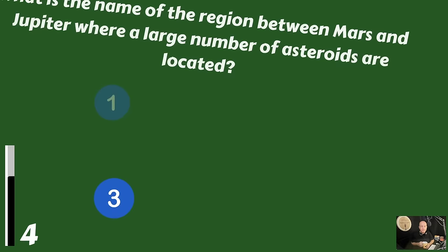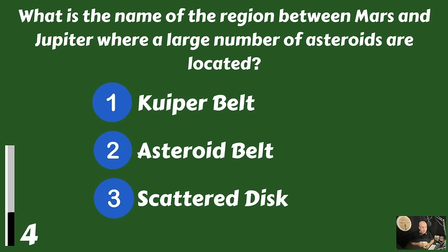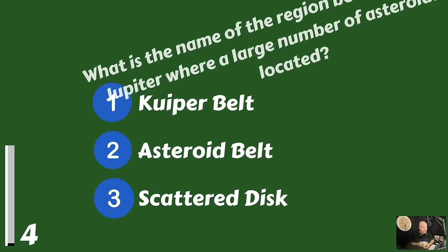What is the name of the region between Mars and Jupiter where a large number of asteroids are located? Is that the Kuiper Belt, is it the Asteroid Belt, or is it the Scattered Disk? It is the Asteroid Belt.